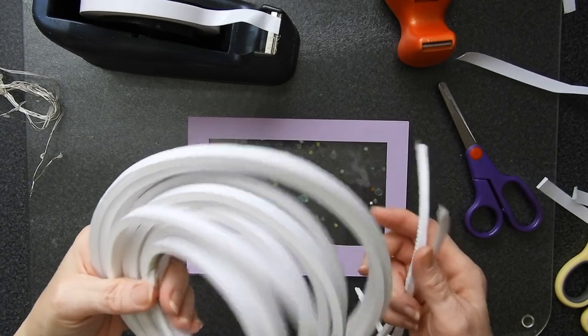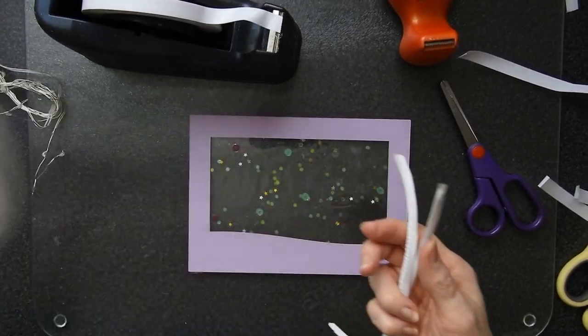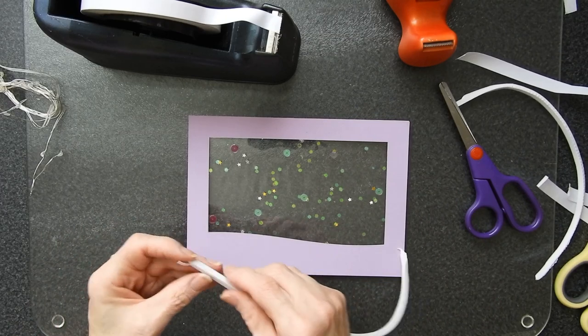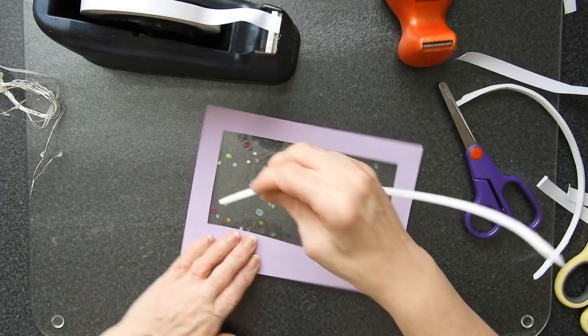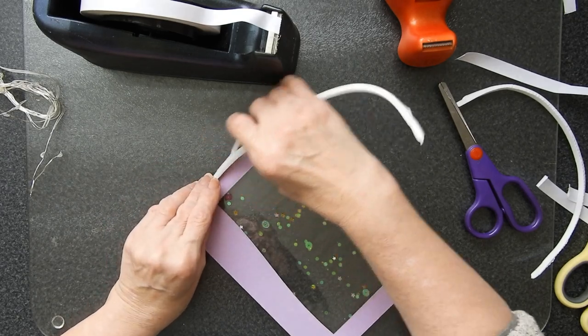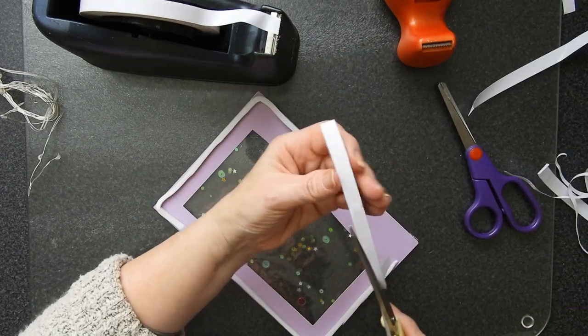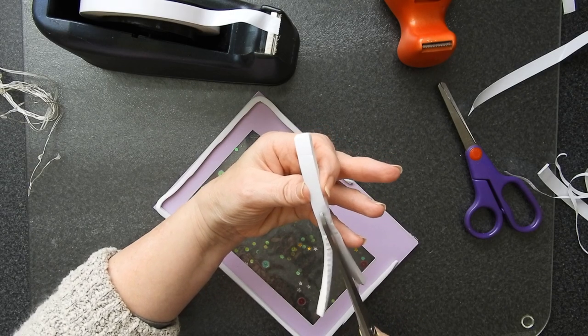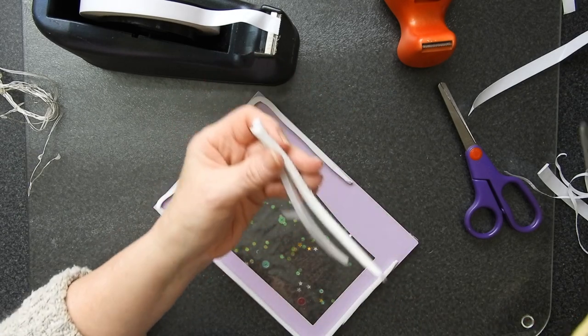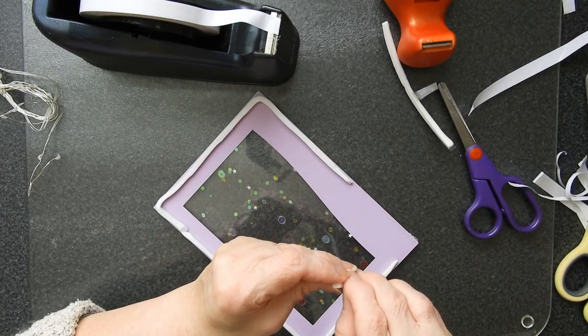My next step is to use some of this draft excluder to neaten up around the outside of this frame. So what I'm going to do is take this and put it around the outside edge, put a sticky layer on one side which has two properties really.